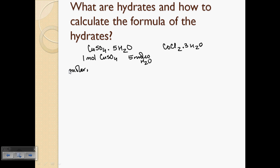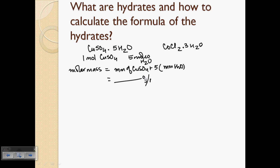The dot in the formula in many ways means plus 5 H2O or plus 3 H2O. To figure out the molar mass of a hydrate, for example cupric sulfate pentahydrate, you calculate the molar mass of cupric sulfate and then add the molar mass of five water molecules, and that gives you the overall molar mass of cupric sulfate pentahydrate.